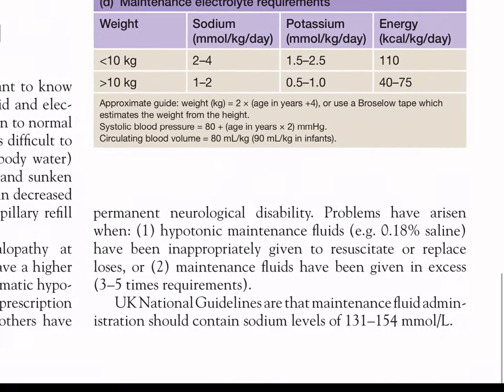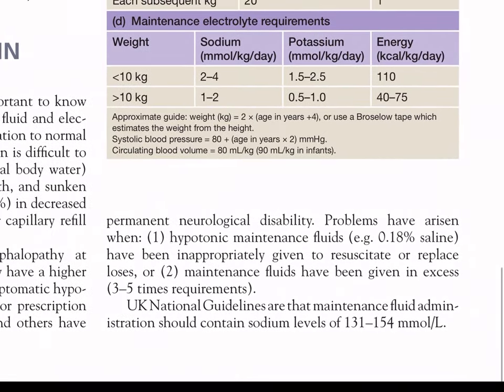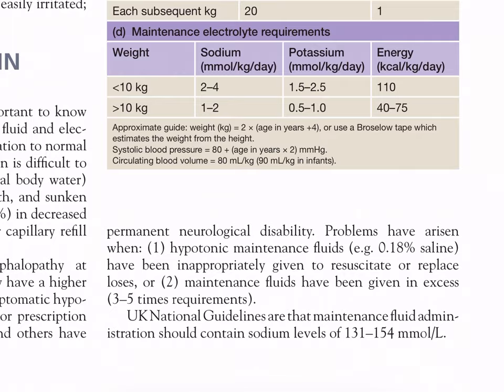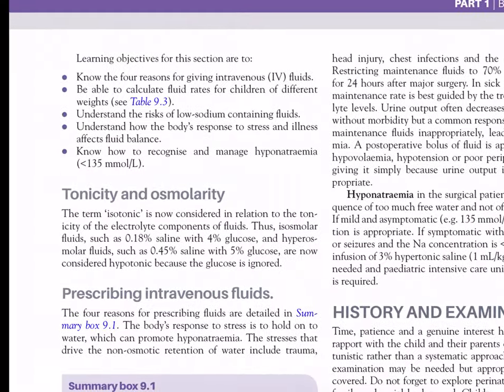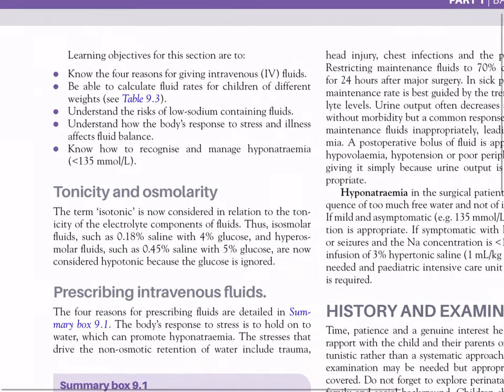United Kingdom national guidelines state that maintenance fluid administration should contain sodium levels of 131 to 154 mmol/litre. Learning objectives for this section: know the 4 reasons for giving intravenous fluids; be able to calculate fluid rates for children of different weights; understand the risk of low sodium-containing fluids; understand how the body's response to stress and illness affects fluid balance; know how to recognize and manage hyponatraemia — less than 135 mmol/litre.